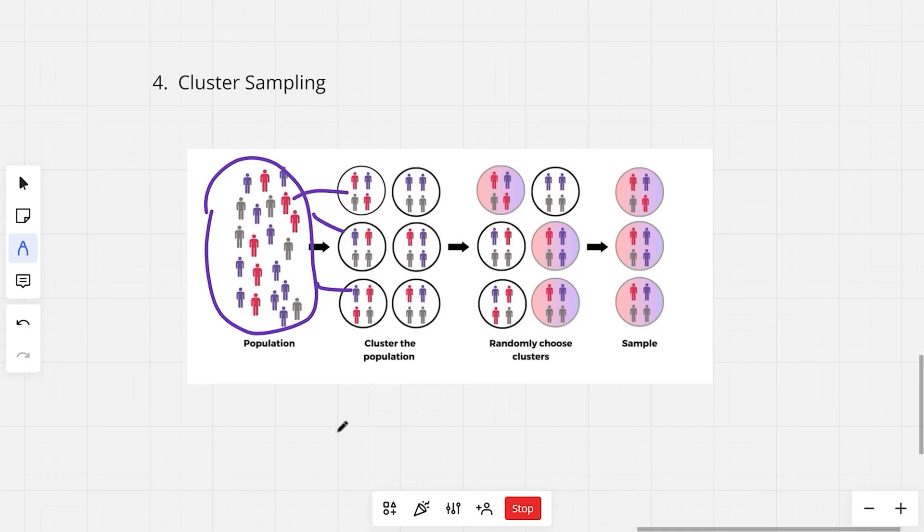Previously in stratified sampling, we were making strata or groups out of our population and then we were randomly selecting people out of those strata. Over here in cluster sampling, we are going to divide the population into different clusters and then we are going to randomly pick an entire cluster for our sample. This is the basic difference between cluster sampling and stratified sampling.